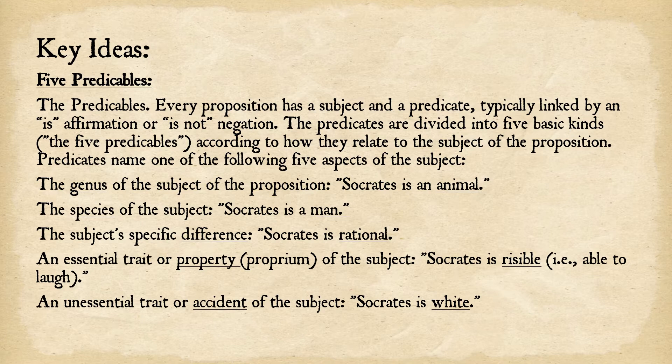Just to recap: to predicate something of something else is to make a statement about it. Every proposition has a subject and a predicate, which is typically linked by an 'is' — affirmation — or 'is not' — negation. So there are five kinds of these predicates, the five predicables, according to how they relate to the subject of the proposition.